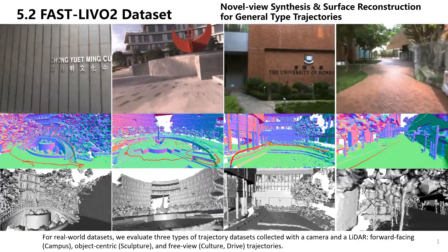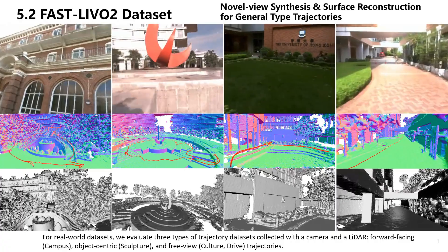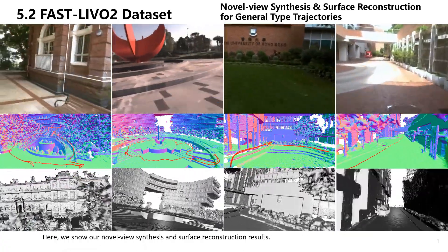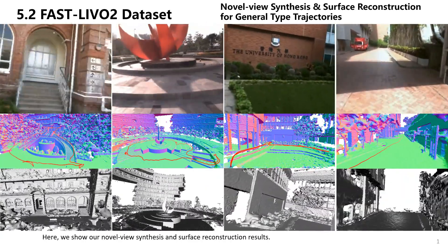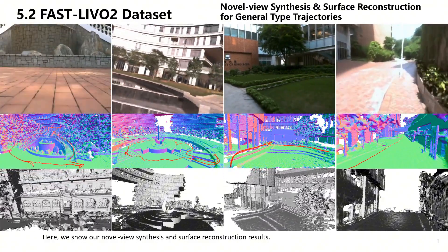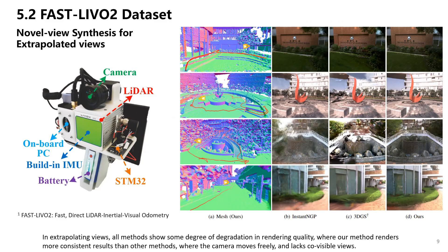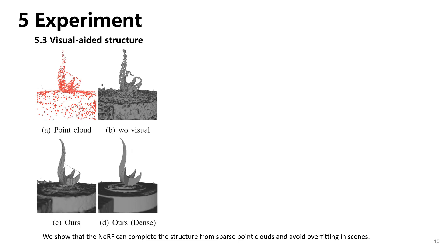For real-world datasets, we evaluate three types of trajectory datasets collected with a camera and a LiDAR: forward-facing, object-centric, and free-view trajectories. We show our novel view synthesis and surface reconstruction results. Using handheld devices and the fast LiVO2 localization algorithm, M2 Mapping can be quickly deployed without time-consuming structure from motion. In extrapolating views, all methods show some degree of degradation in rendering quality, where our method renders more consistent results than other methods, particularly where the camera moves freely and lacks co-visible views. We show that NeRF can complete the structure from sparse point clouds and avoid overfitting in scenes.